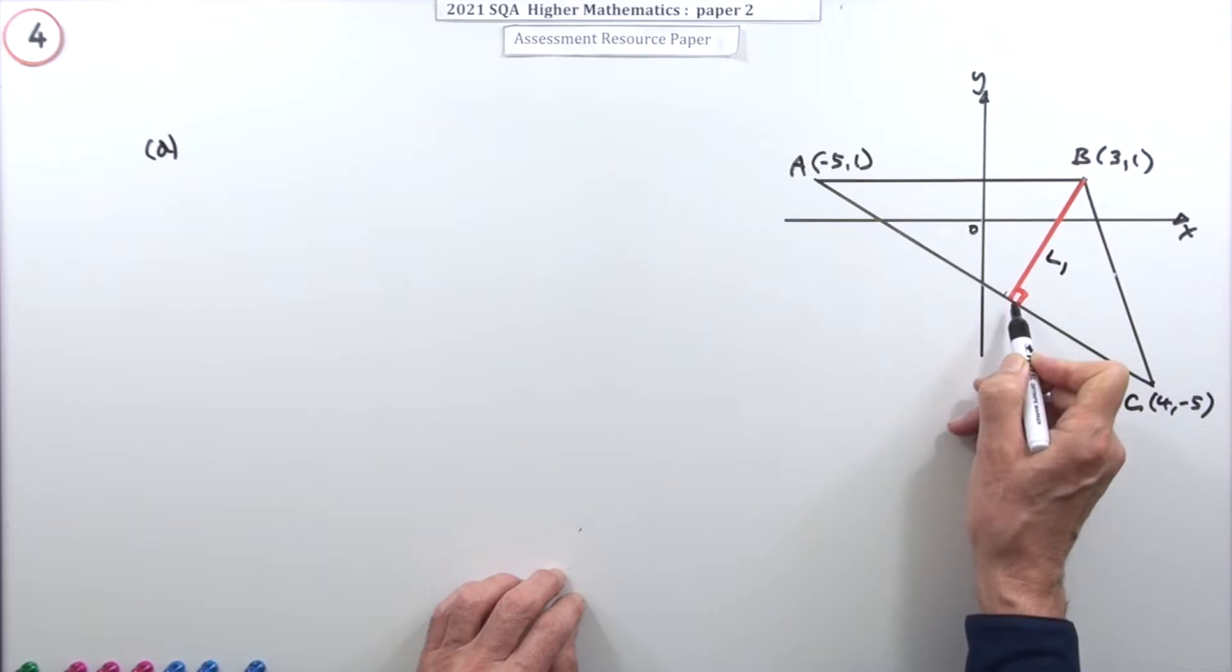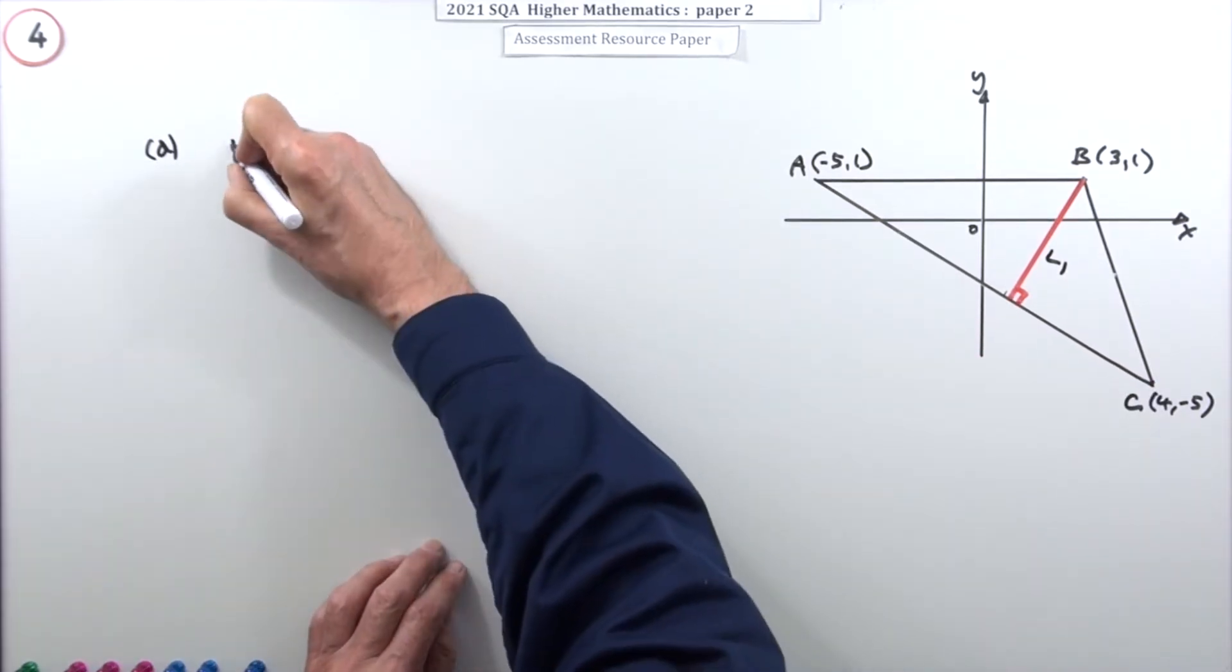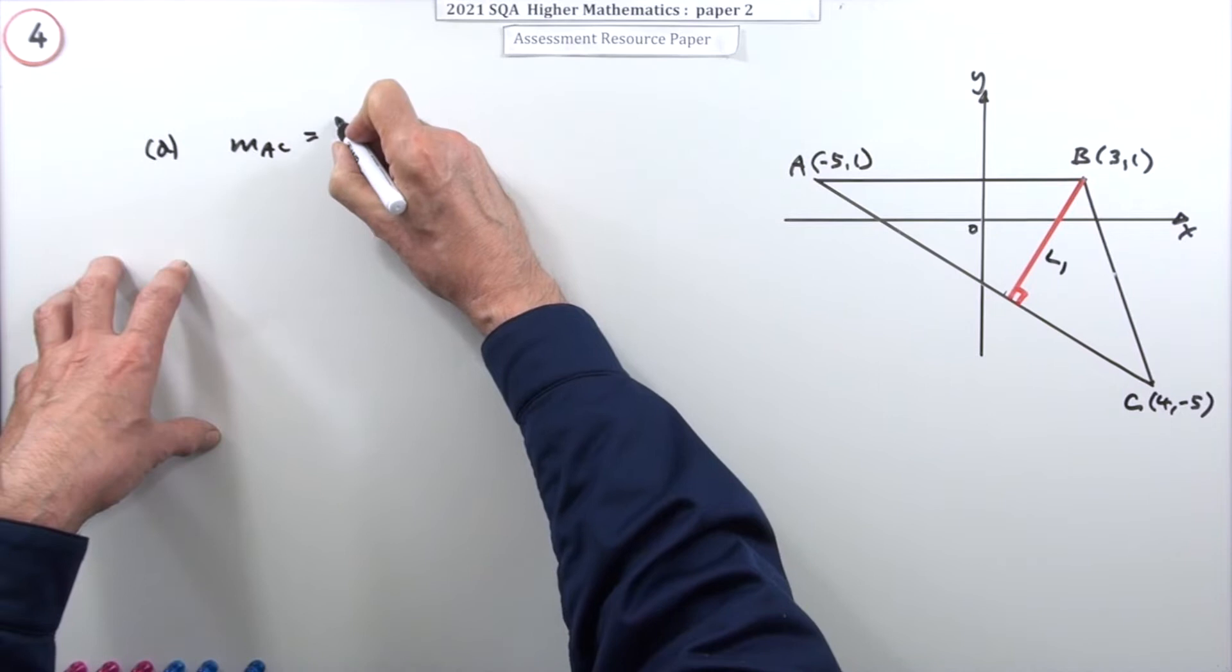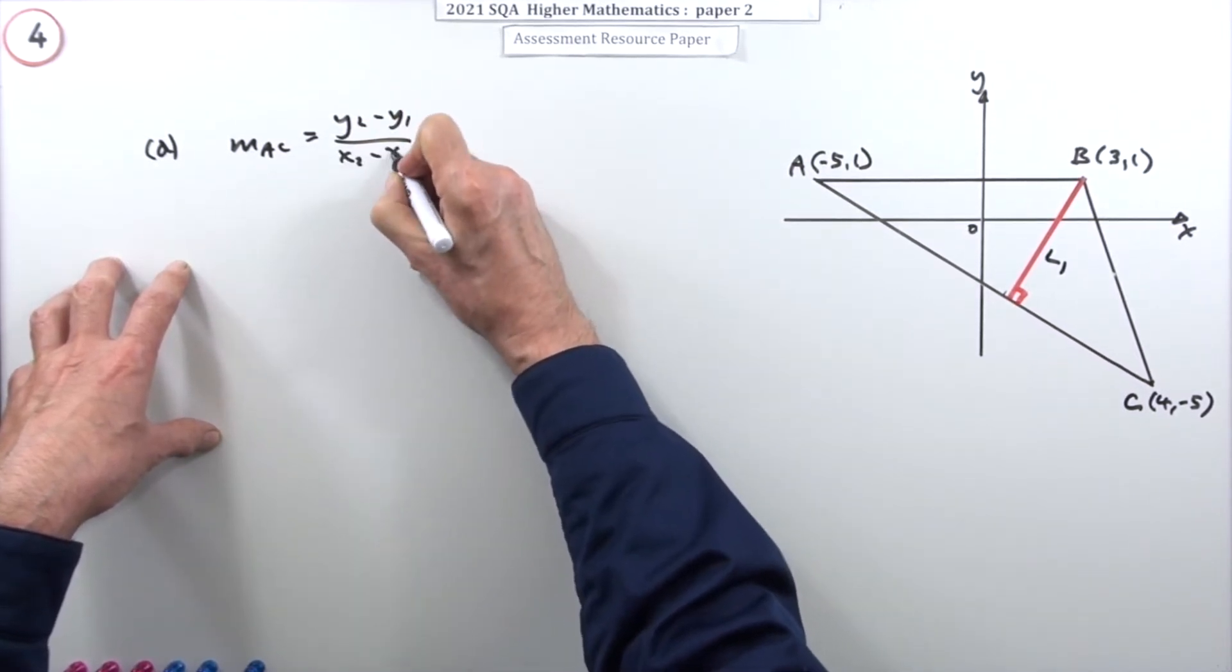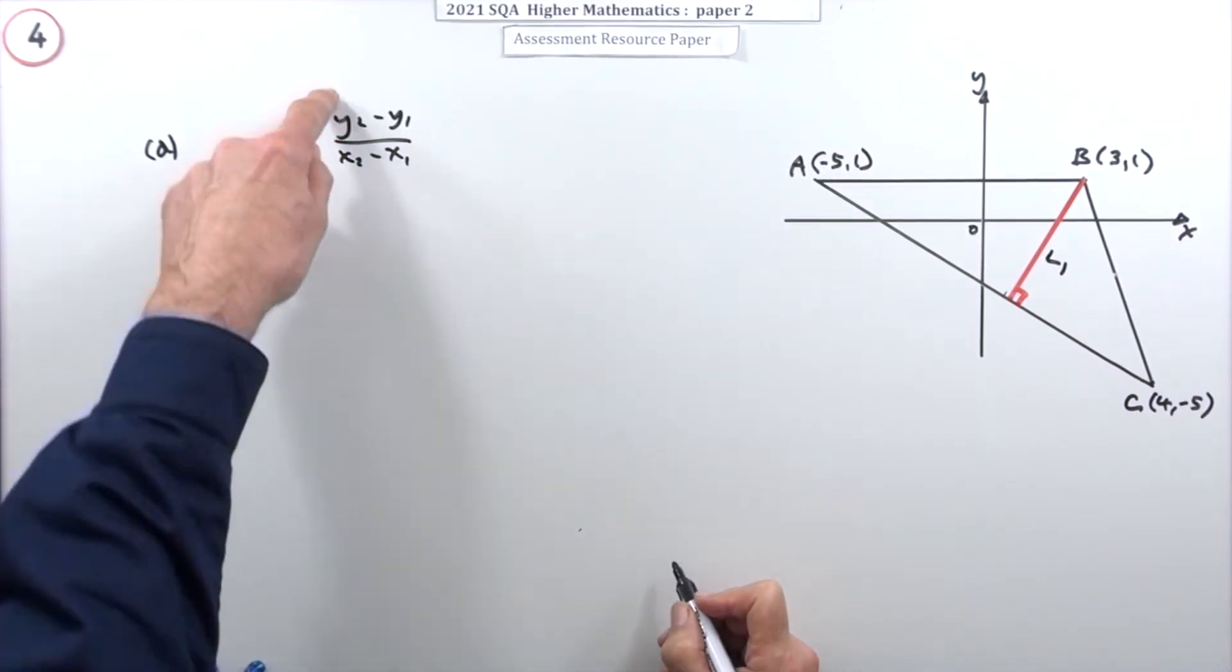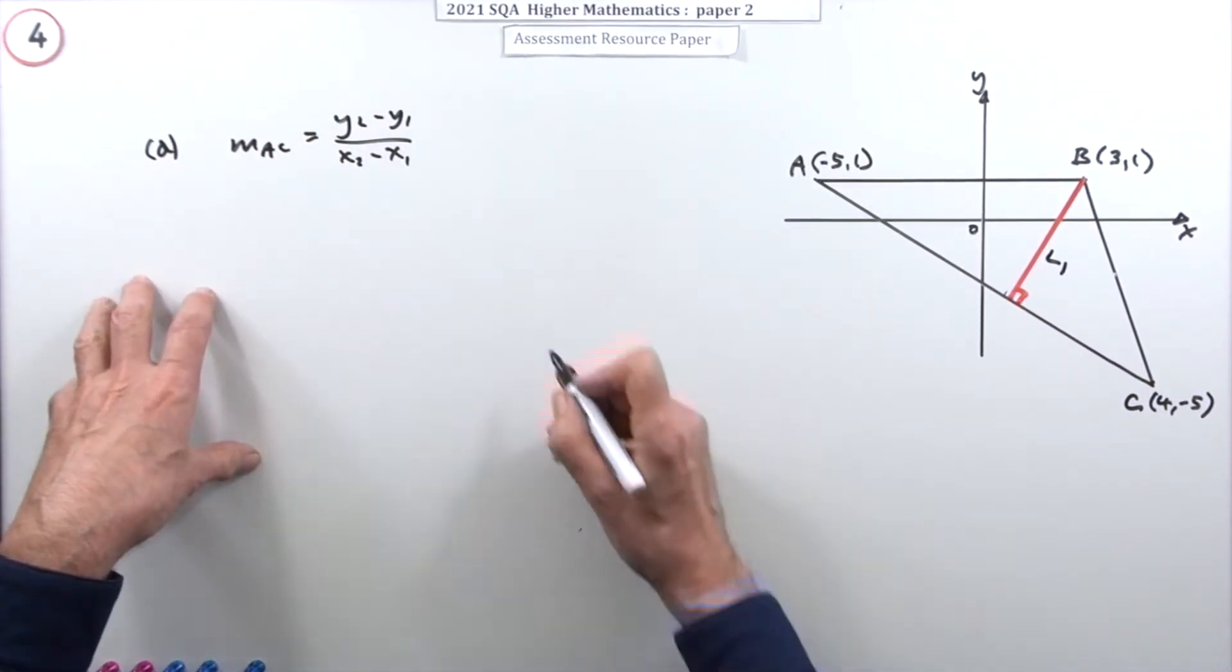So the first thing is, what's the gradient of AC? Well, that'll be y2 minus y1 over x2 minus x1, which could be the difference in y, delta y, over delta x.